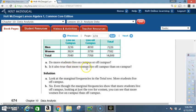B. Is it also true that more women live off campus than on campus? Solution. No. Even though the marginal frequencies show that more students live off campus, looking at just the row for women you can see that more women live on campus than off campus. So look at women. On campus is 3,800. Off campus is 3,758.